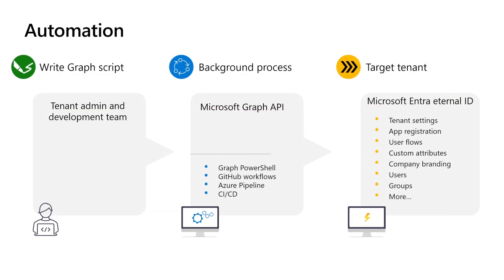To automate the management of Microsoft Entra External ID, we provide an API interface called Microsoft Graph. For improved CI/CD deployment, you can also use Microsoft Graph PowerShell scripts, GitHub Actions, Azure Pipelines, or any other CI/CD automation services.